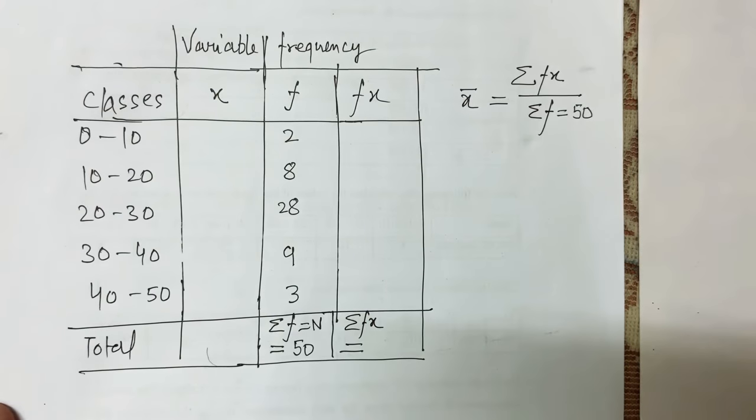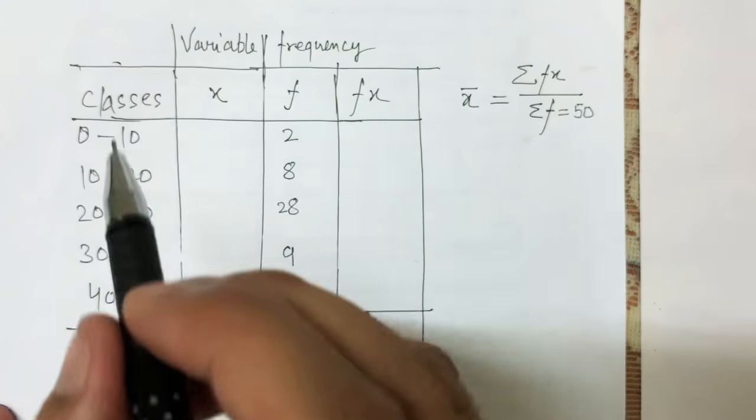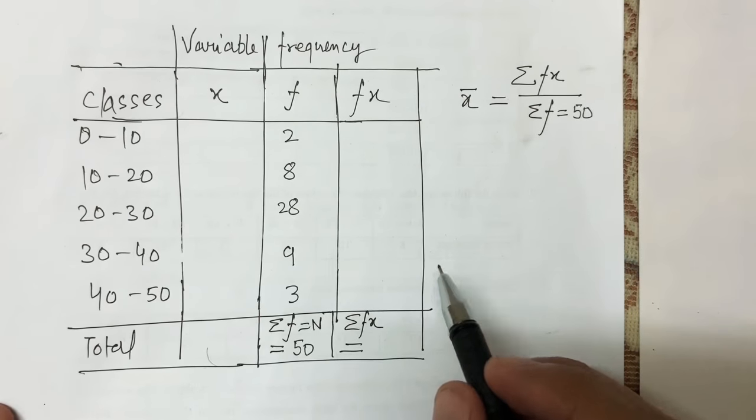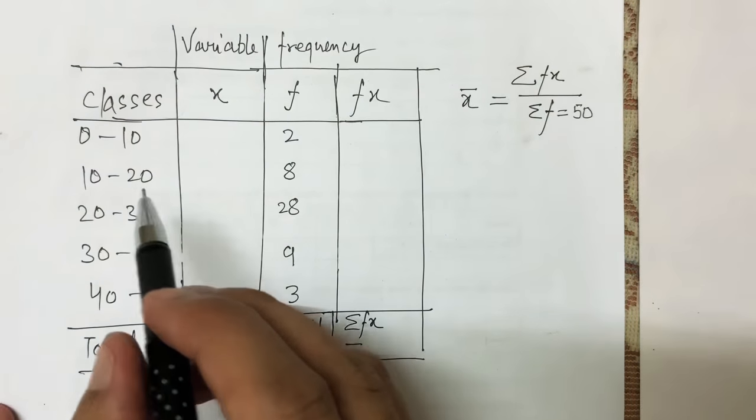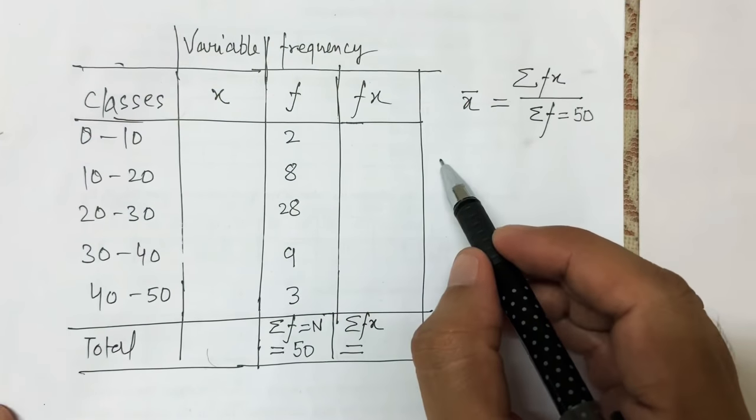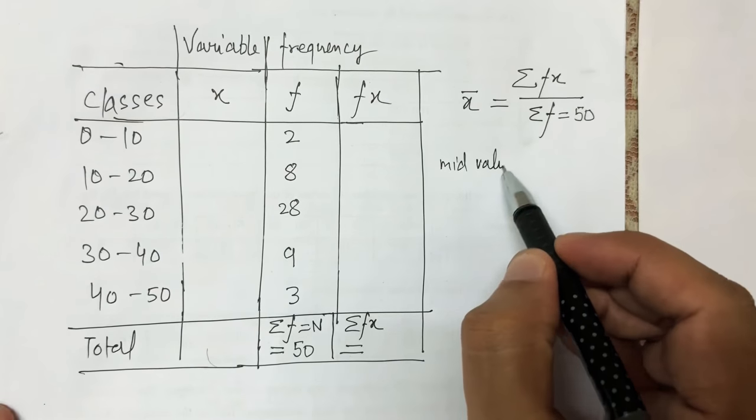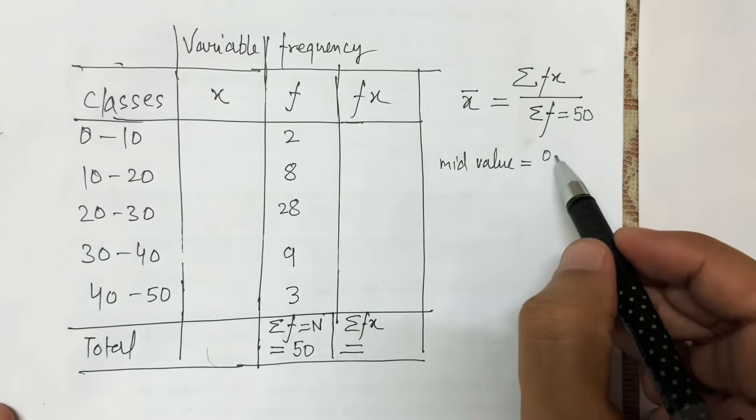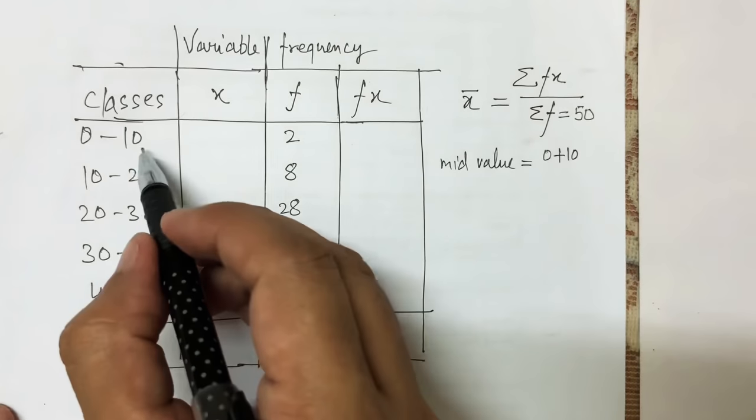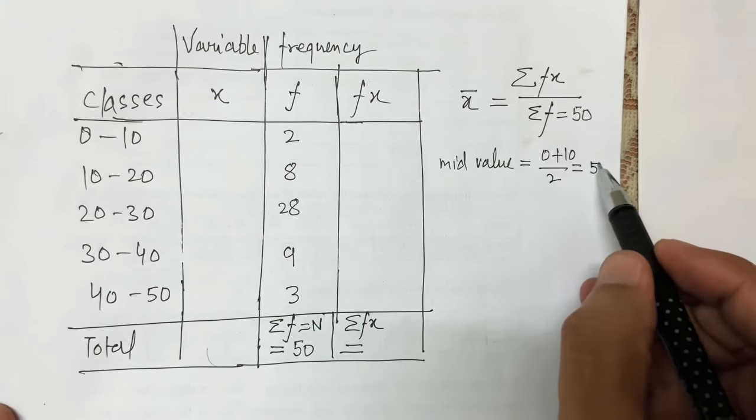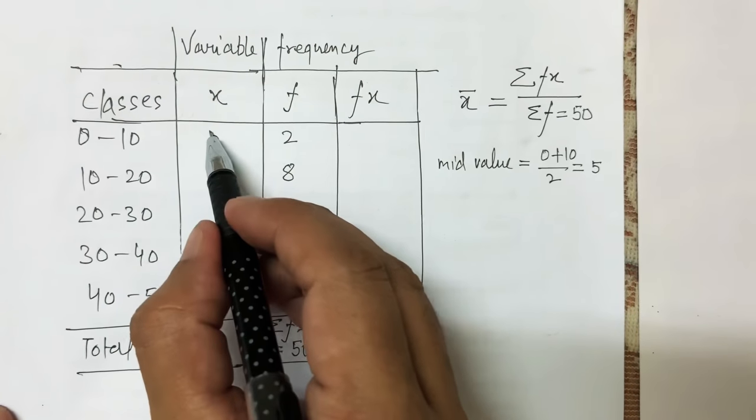The mid value is obtained by (upper limit + lower limit)/2. For the first class, mid value = (0 + 10)/2 = 5.